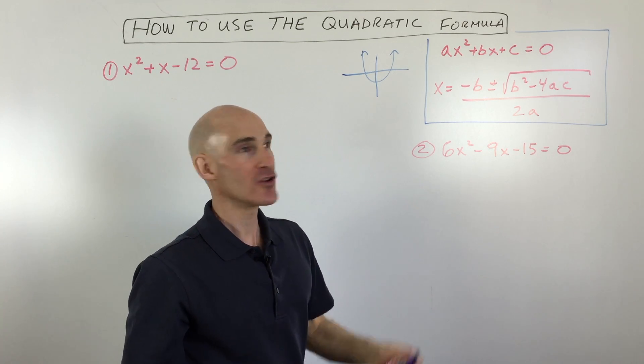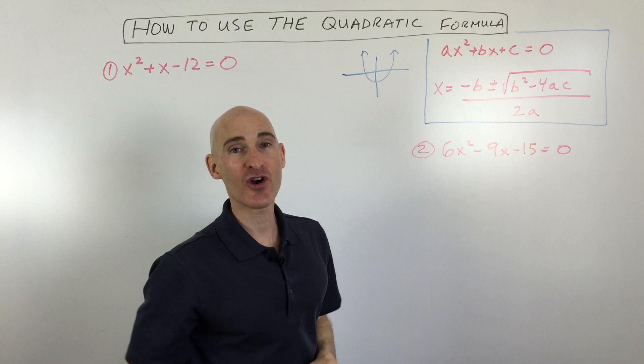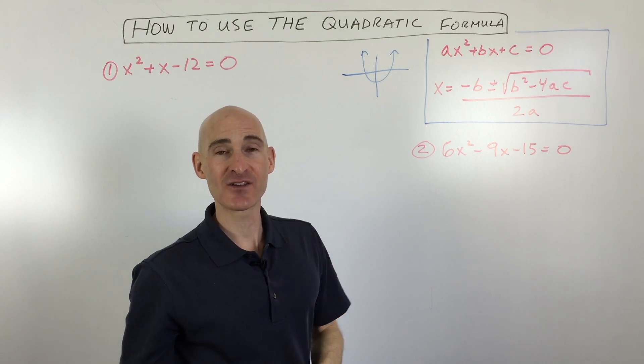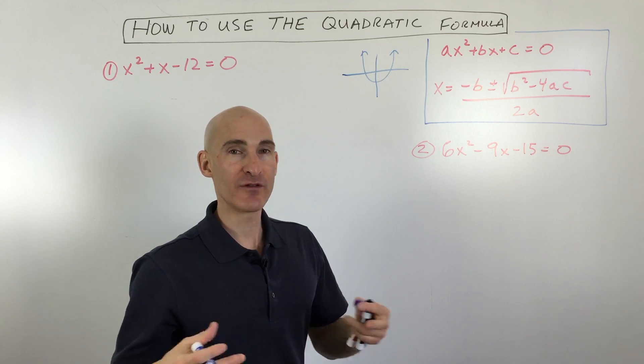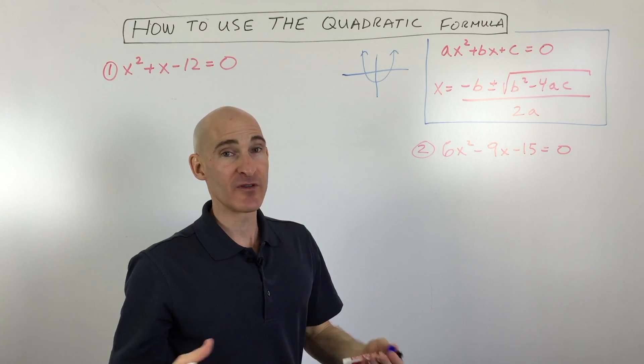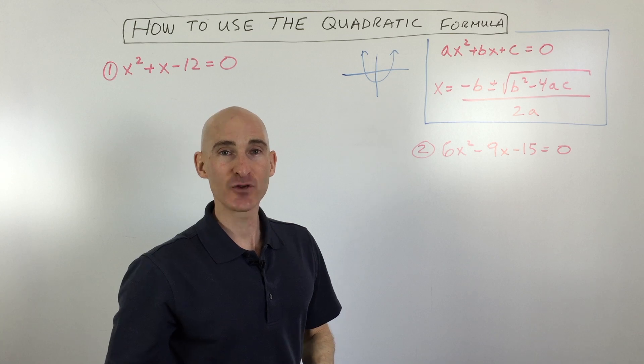You can complete the square. You can graph the parabola and see where it crosses the x-axis. You can factor it and set the factors to zero. But sometimes, especially with that last example, the factoring might be very difficult or it might just not be able to be factored with integers.